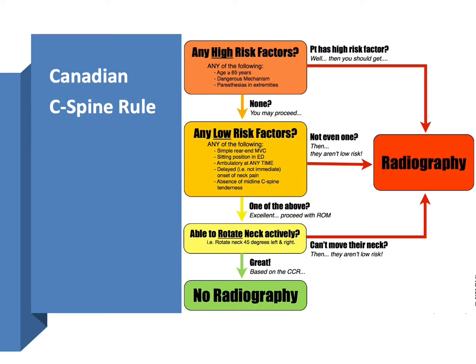If they do not have any high-risk factors, you then want to check for low-risk factors, which include simple rear-end MVC, sitting position in the emergency department, whether the patient was ambulatory at any time since their injury, delayed onset of neck pain, or absence of midline C-spine tenderness. If none of these low-risk factors are present, radiography should be obtained. However, if one or more are present, the next step is to check whether the patient is able to rotate their neck actively 45 degrees to the left or right. If they cannot, radiography is required. If they have no high-risk factors, at least one low-risk factor, and can rotate their neck, then radiography is not required.